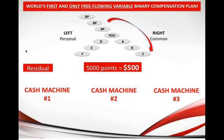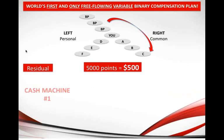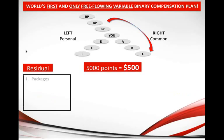In Global Wealth Trade we have three cash machines. Cash machines make you lots of cash, and Global Wealth Trade doesn't just give you one or two — it gives you three cash machines that will make you lots of money. Let's take a look at how these cash machines work to make you passive lifetime residual income.